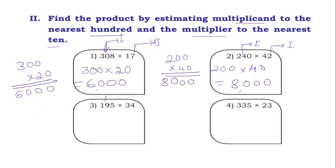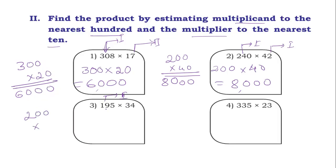Next: 195 × 34. Estimating 195 to the nearest 100: this comes in the second case, add 1 to the hundreds place, giving 200. Estimating 34 to the nearest 10: unit digit is 4 — first case, put 3 as it is, giving 30. 200 × 30: 30 × 0 = 0, 30 × 2 = 60, so the answer is 6000.